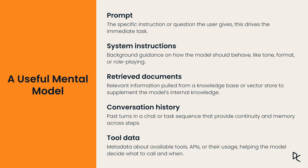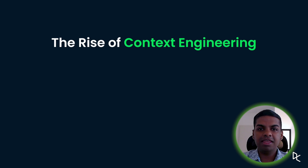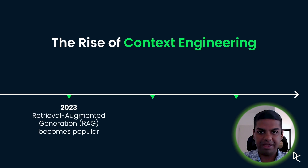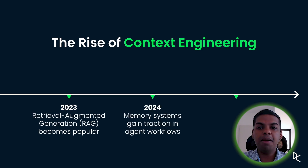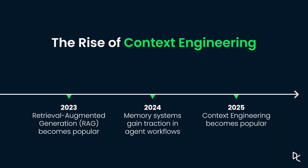It might also be useful to think about context engineering as including the prompt, system instructions, retrieved documents, conversation history and tool data. The term context engineering took off in 2025, but the work actually started much earlier. In 2023, developers were already using retrieval augmented generation, or RAG, to pull in documents. In 2024, memory systems and tool orchestration became common in agent workflows. By 2025, the industry started calling the whole process — which includes retrieval, memory, prompts, and tool metadata — one discipline: context engineering.